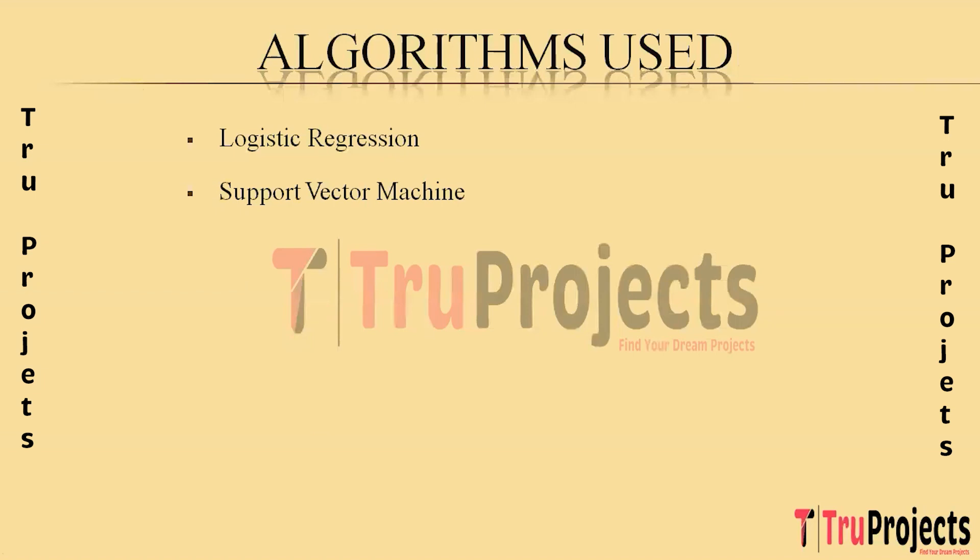The next algorithm is Support Vector Machine (SVM), a versatile algorithm for classification and regression tasks. It works by finding the hyperplane that best separates data points of different classes in a high-dimensional space. SVM is effective in capturing complex relationships in data and is chosen for its ability to handle nonlinear decision boundaries in sentiment analysis.